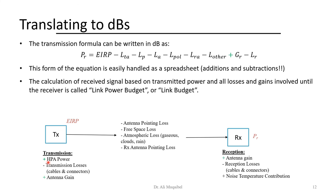If you want to translate things into dB, remember: in linear scale division becomes subtraction and multiplication becomes addition. So the same formula expressed in dB is much easier to handle. Going back to our figure, gains are additions and losses are subtractions. The calculation of the received signal based on the transmit power and all losses and gains until we get to the receiver is called the link budget, power budget, or link budget analysis.